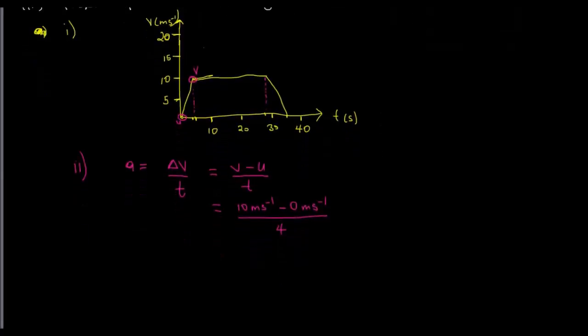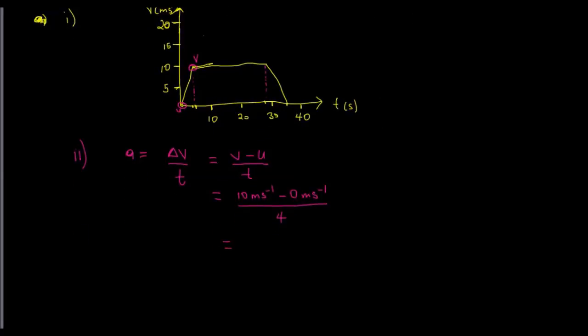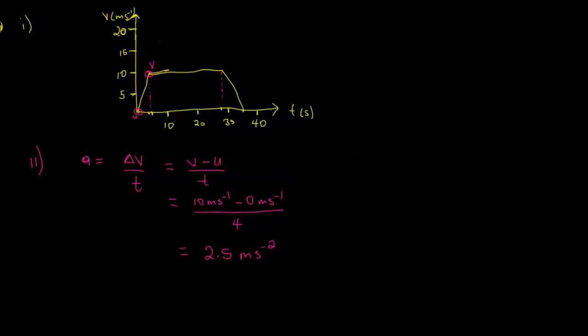Calculating that gives us 2.5 meters per second squared — that is our initial acceleration during this period of the journey. Now for the deceleration: deceleration is just negative acceleration, so we again use acceleration equals v minus u over t.